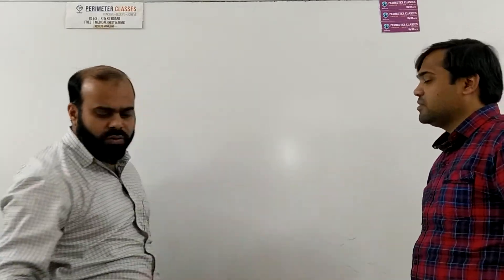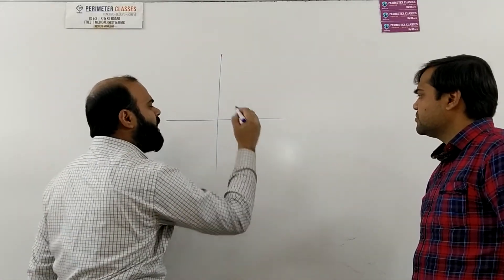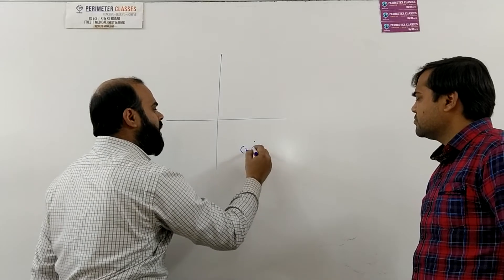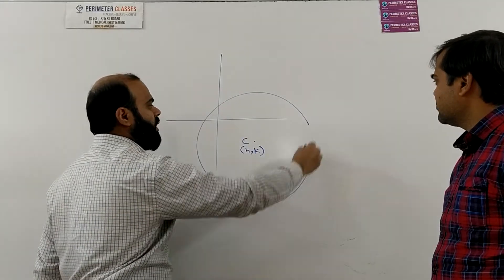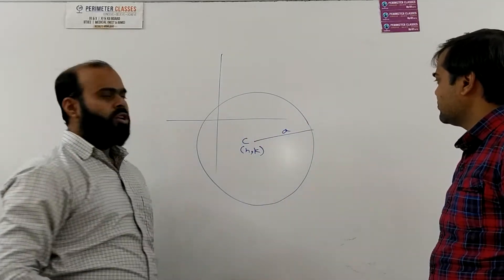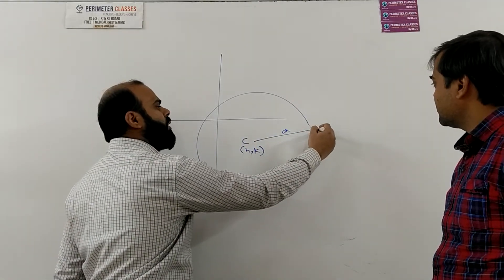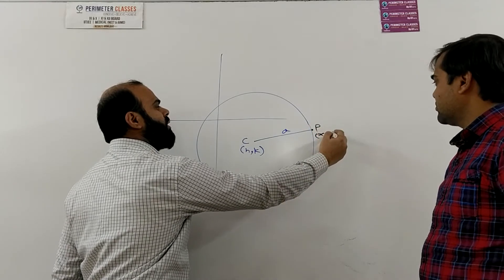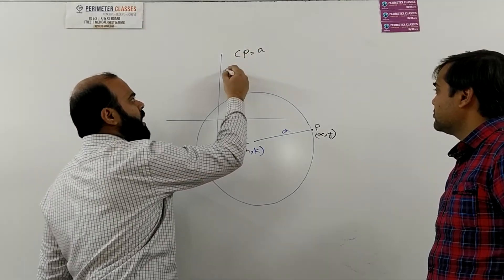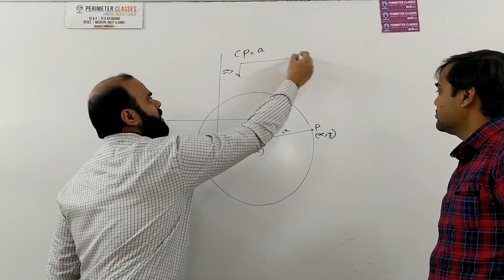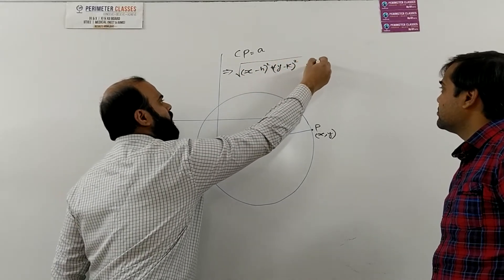Suppose h comma k and we are seeing that this is the center of the circle and then we are drawing a circle with a radius a units. So what would be the equation of the circle in such situation. So again you have to take a point P x comma y on the circle and by distance formula this CP is equal to a and CP is root over x minus h whole square plus y minus k whole square is equal to a square.